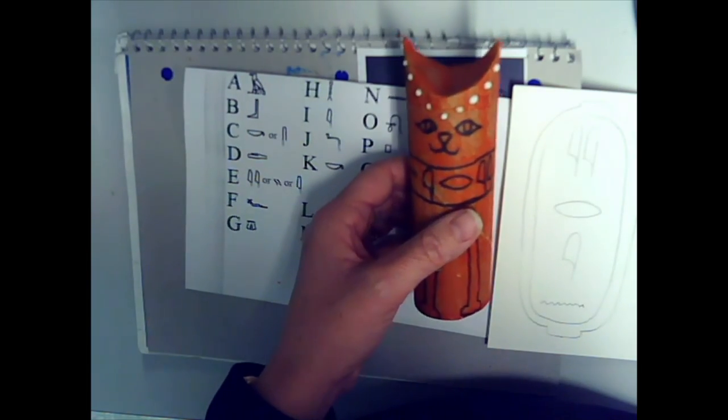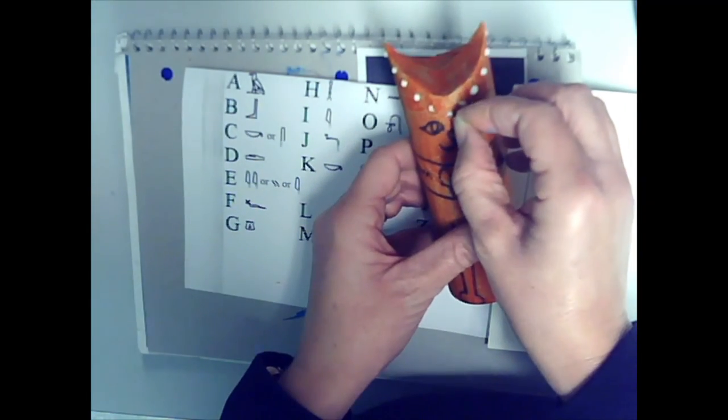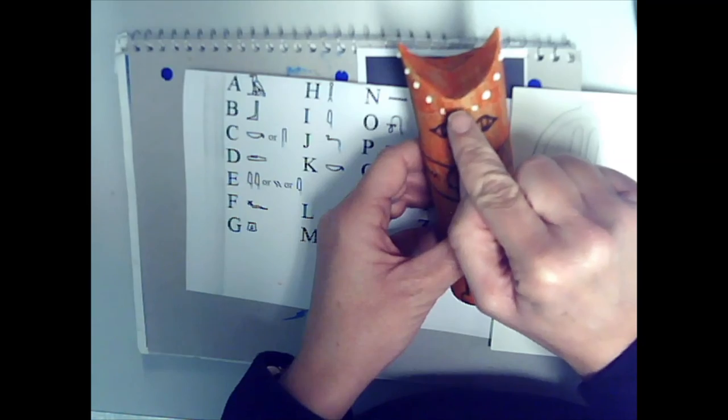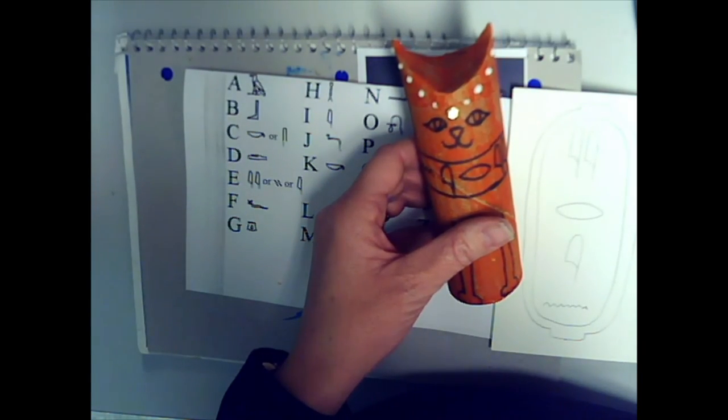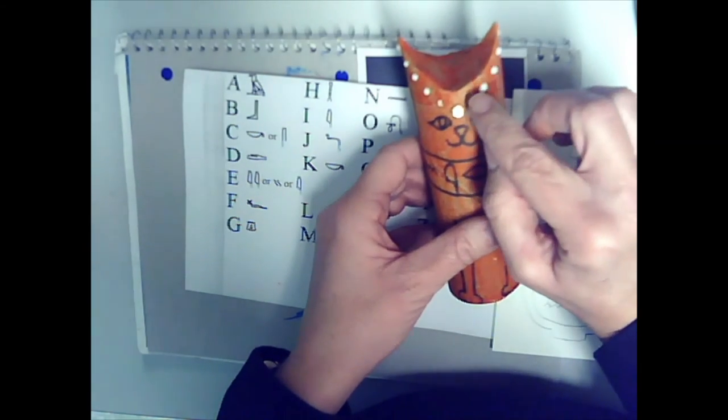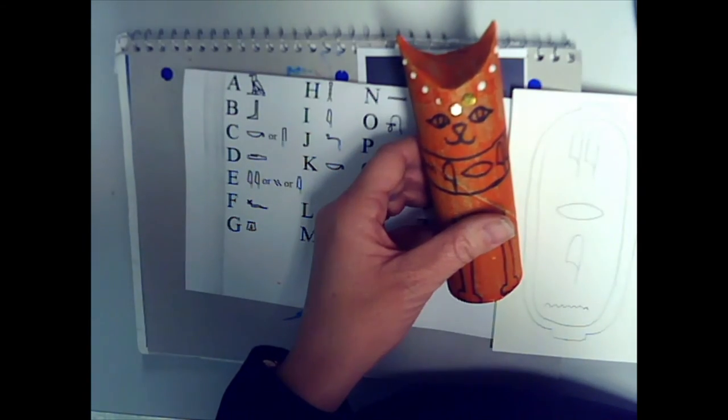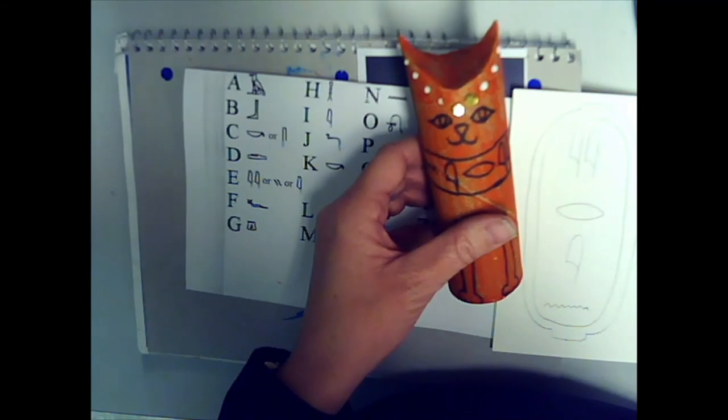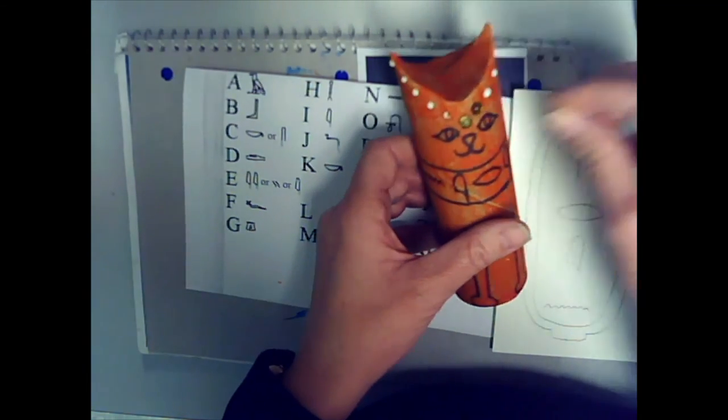You could either use glitter if you have glitter, sequins, maybe you have little buttons. You could also just cut little pieces of paper if you want, or you don't have to do this part at all. I am just placing my sequins on my cat.